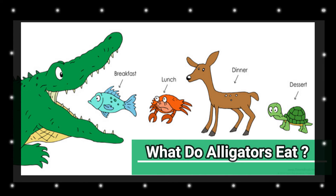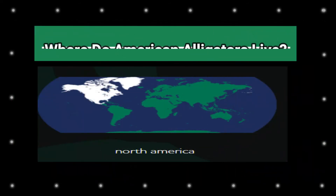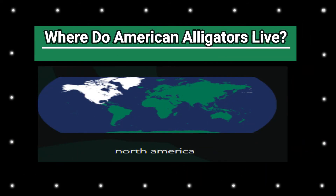Here's a fun example of what alligators eat: fish, crabs, deer, and turtles. They must have very strong teeth to break into turtle shells! As for where American alligators live — the name gives it away! They live in North America, and can mainly be found in Texas and Florida.